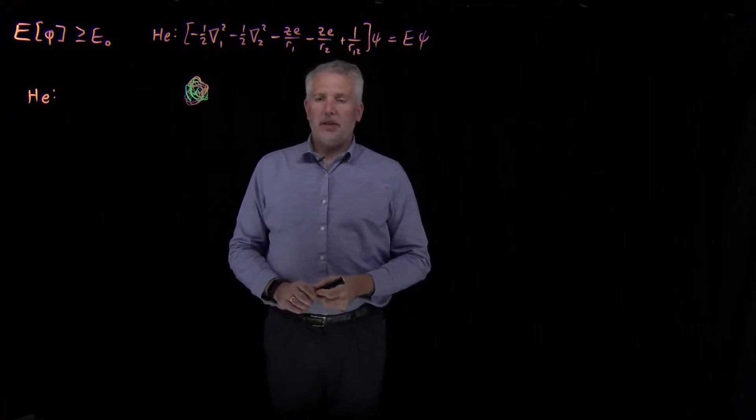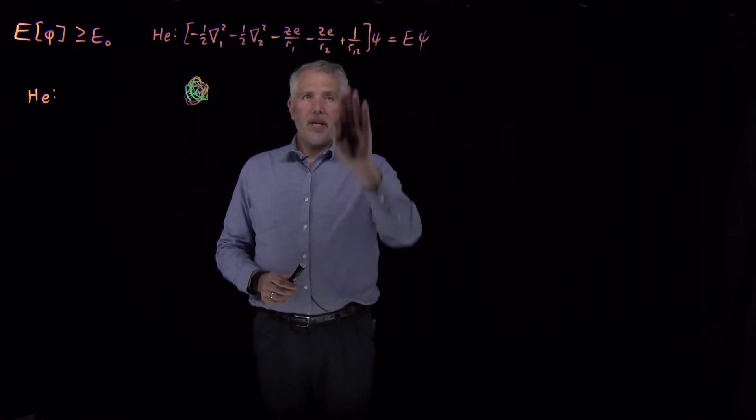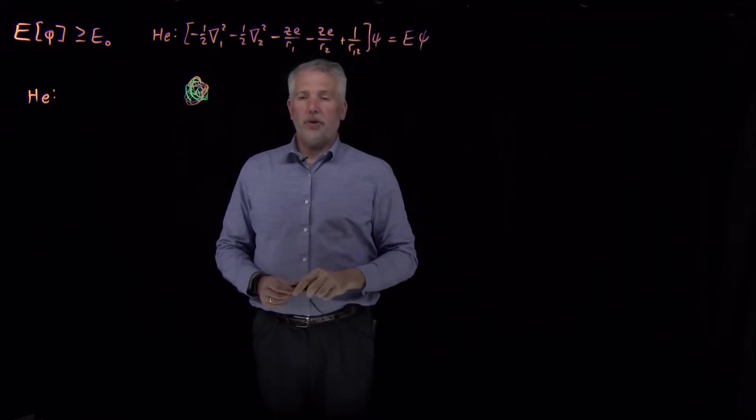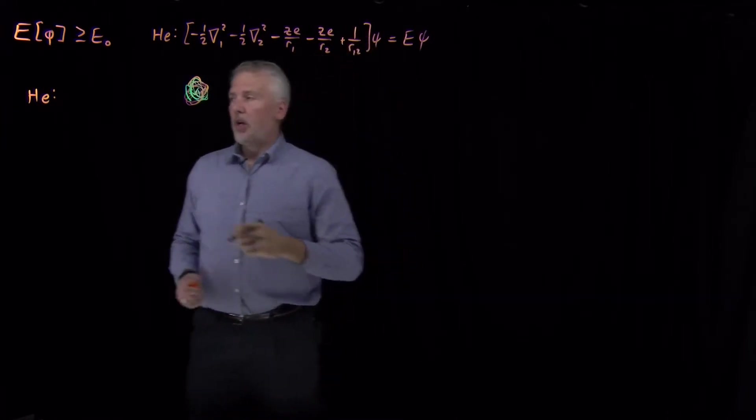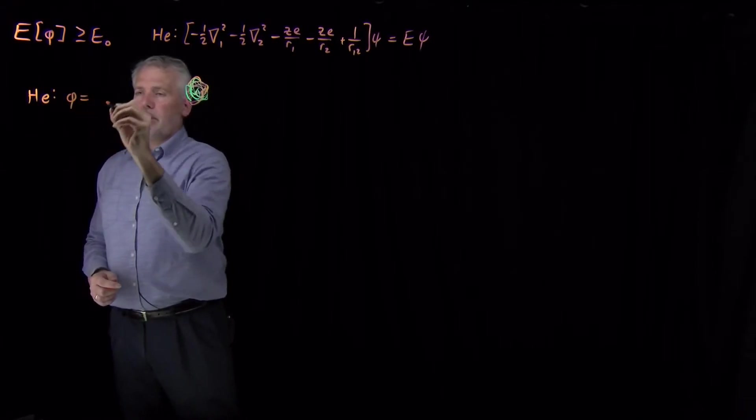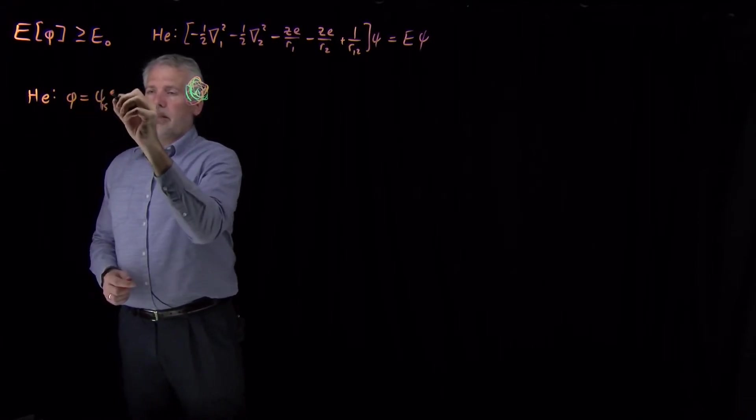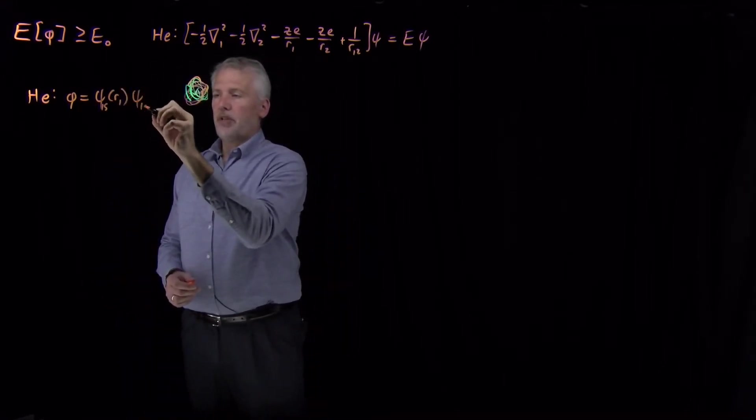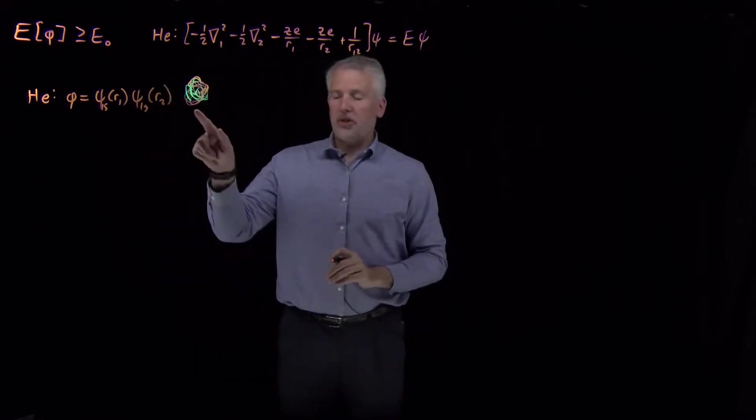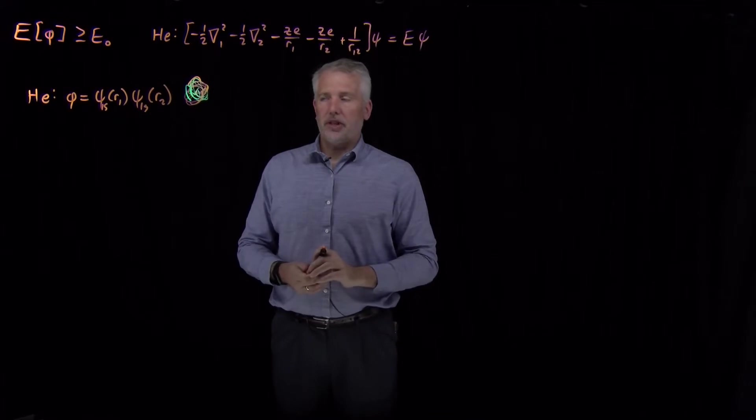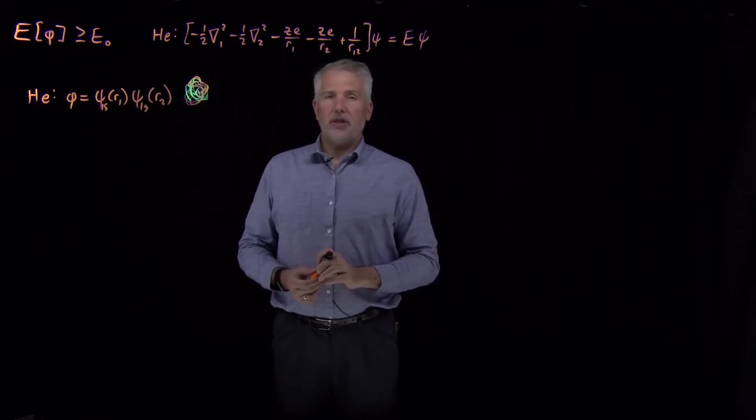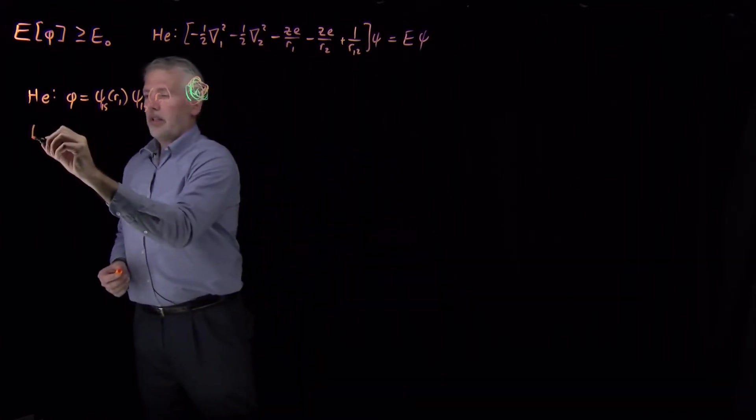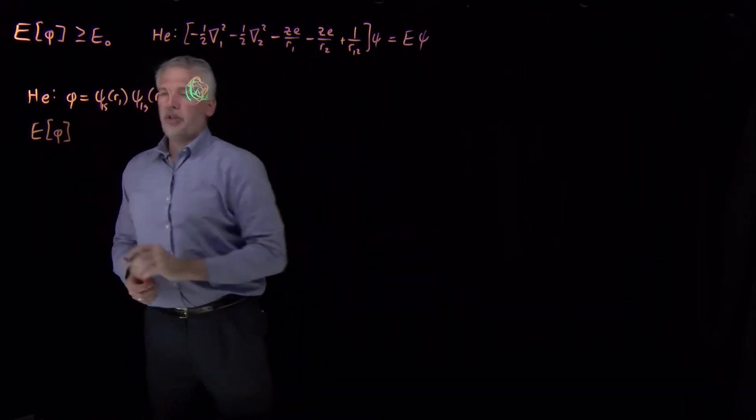So if we're going to make a naive guess about what to use for that wave function, in a wishful thinking sense, if we ignore this electron-electron repulsion, we might guess that the first electron occupies a 1s orbital, and the second electron also occupies a 1s orbital. Both of the electrons occupying spherical shells around the nucleus, kind of ignoring each other as they would if they didn't have any Coulomb interaction between themselves.